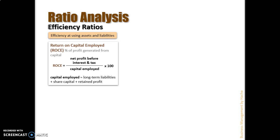The capital employed is the addition of long-term liabilities plus share capital plus retained profit. Share capital and retained profit are part of the equity, plus the long-term liabilities. Capital employed is all the money you have used to finance and put your business to work — the share capital (investments from the owners), the retained profit (accumulated from year to year), and any additional long-term debt or mortgage invested to put the business to work. You get the net profit before interest and tax from the profit and loss account, divide by capital employed, times 100, and you get the percentage of profit generated from the capital invested.